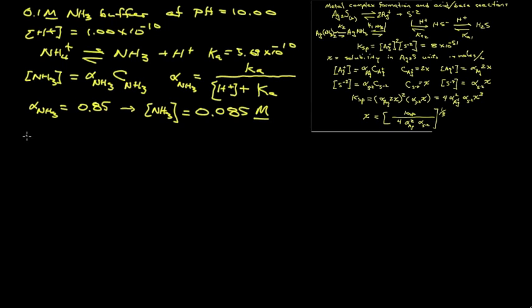Now we can calculate the alpha value for the silver in the free ion form. It's going to have as a denominator 1 plus K1 times the ammonia concentration plus K1 K2 times the ammonia concentration squared. And the numerator is the first term because it's the first member of the family, the one that has no ligands attached.